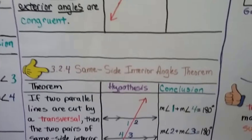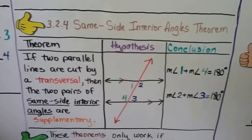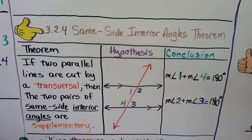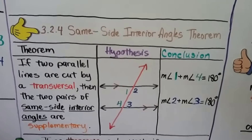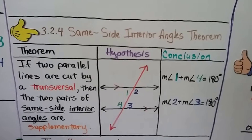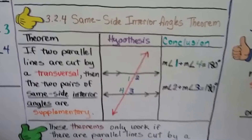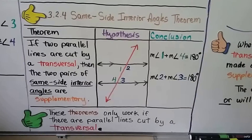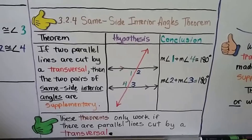This is the Same Side Interior Angles Theorem. It says if two parallel lines are cut by a transversal, then the two pairs of same side interior angles are supplementary. So that means 1 and 4 are supplementary and will equal 180 degrees, and 2 and 3 are supplementary and will equal 180 degrees. Keep in mind that these theorems only work if there are parallel lines cut by a transversal. If our lines are not parallel, then these do not apply.